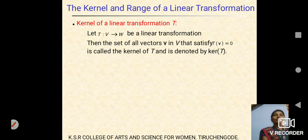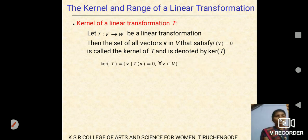The kernel: the kernel of a linear map is also known as null space. The null space is the linear subspace of the domain of the map which is mapped into the zero vector. In group theory, the kernel is the set of all elements in group G which map into the identity element. The kernel of a transformation is the set of all vectors v such that T(v) = 0, for all vectors v belonging to domain V.